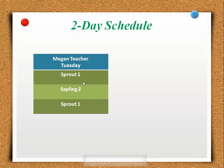There are just a couple more things to mention about a two-day class schedule. Right now we're looking at the Tuesday schedule, and you'll see the pattern — it goes sprout, sapling, sprout. So if we think about how the order of classes will go on Thursday, following this pattern: sprout, sapling, sprout.